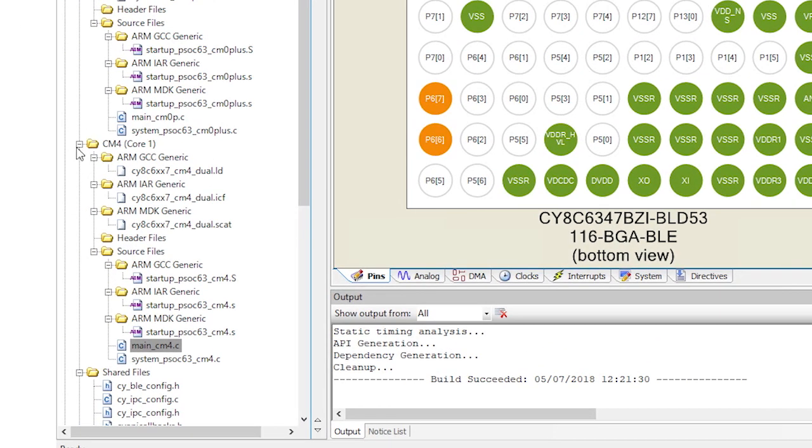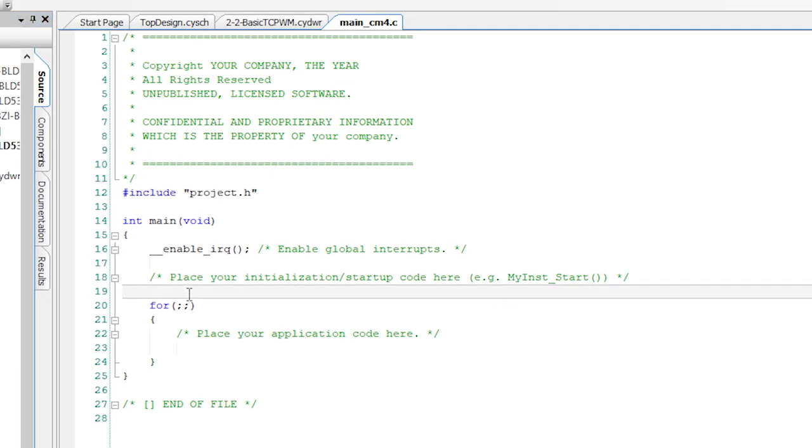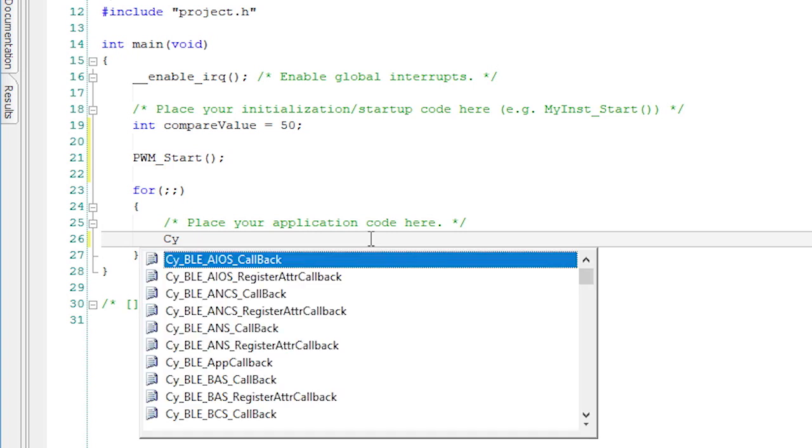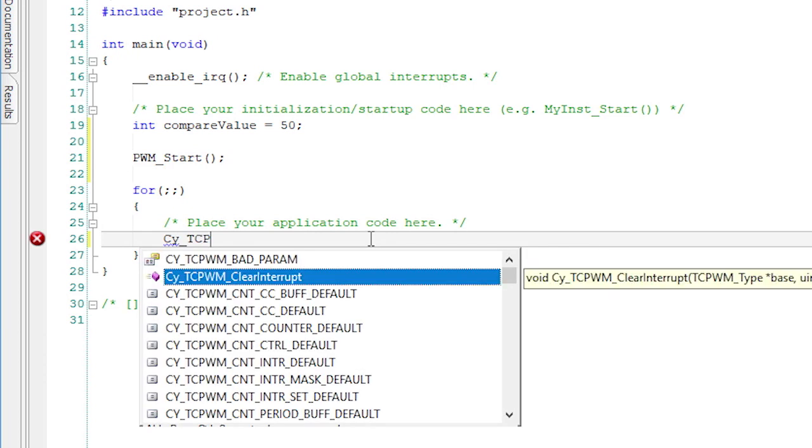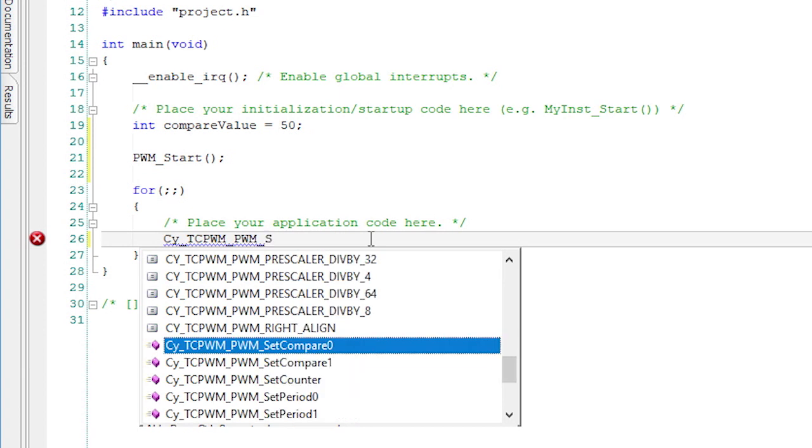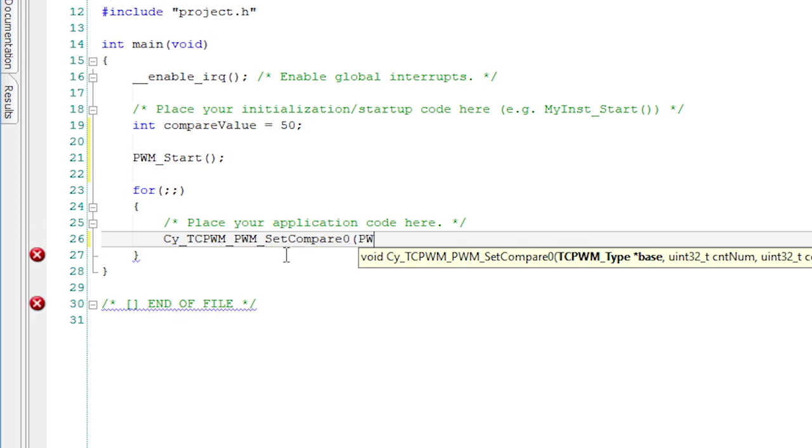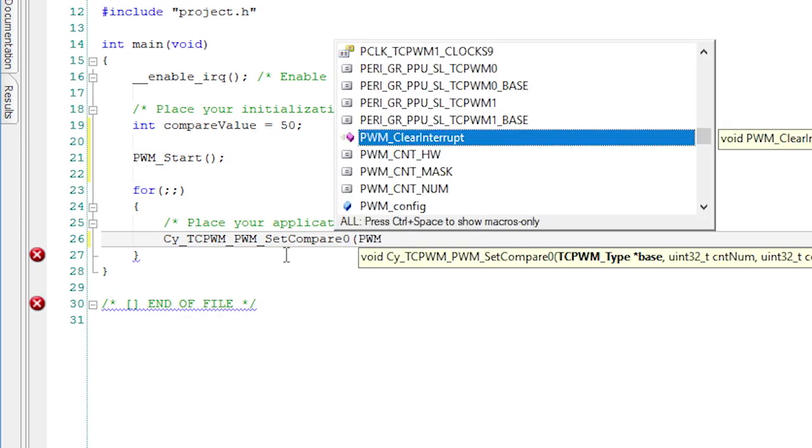Now, let's go to the CM4 main application file. I will add a local variable to the main function called compare value and set the default to be 50. Start the PWM using the simple start API command. In the infinite for loop, I will change the compare value of the PWM using the cy_tcpwm_pwm_set_compare API call and the PWM_HW macro.